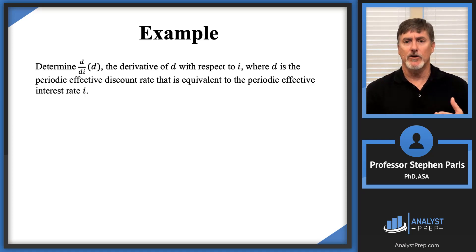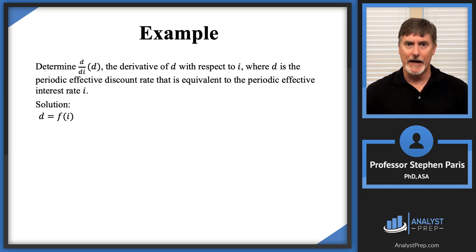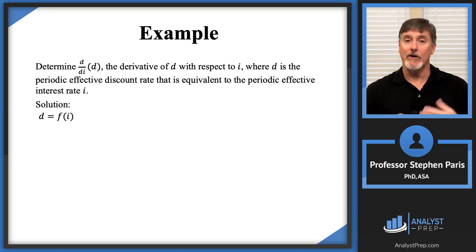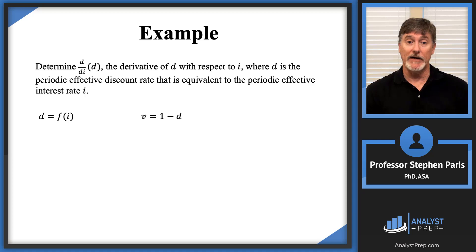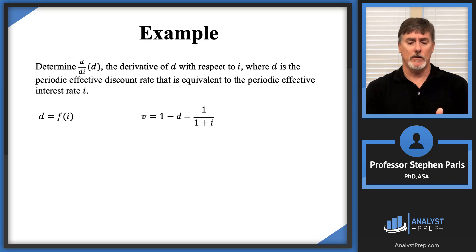Now for the solution. I'm asked to find the derivative of D with respect to I, so I need to think of D as a function of I. Because they're equivalent rates, I'll look at the periodic discount factor V. On the one hand, V equals one minus D. If I was given I, V would be equal to one over one plus I. This relationship will allow me to write D in terms of I.